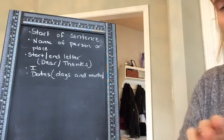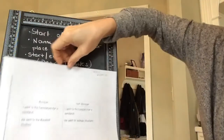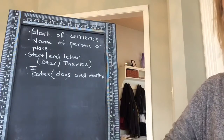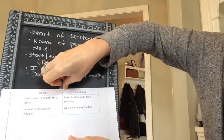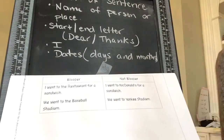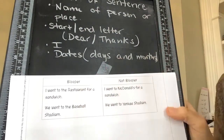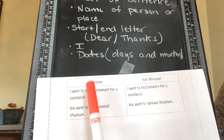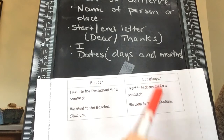So let's look at a couple of sentences here. You have this paper in your packet. I'm going to fold it a little bit so you can see the whole thing really well. I'm going to move the board a little bit closer so you can see it. We're going to do this paper together, and then the next paper you're going to do by yourself. This is the blooper section, and this is the not-blooper section.